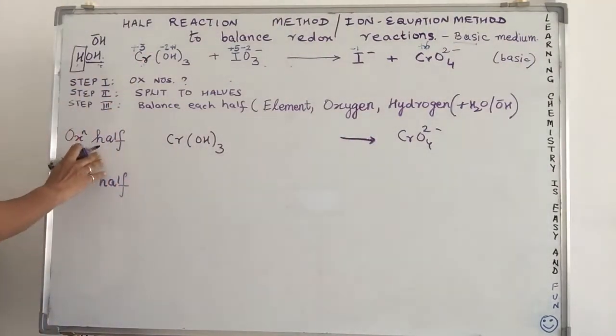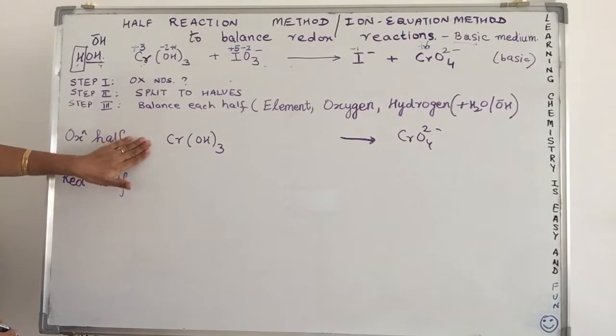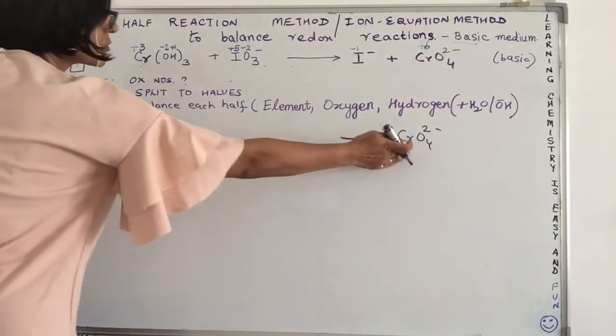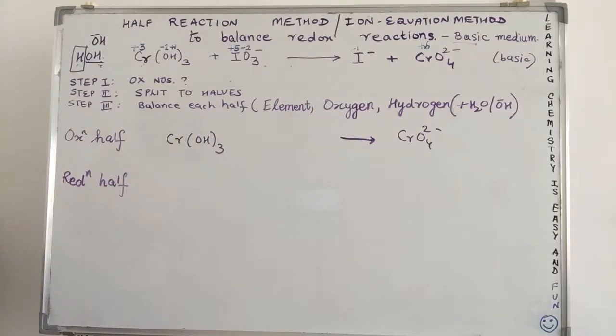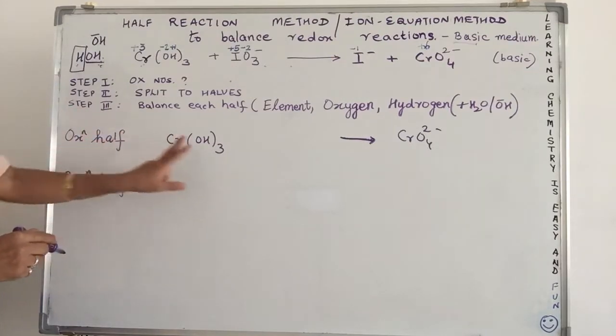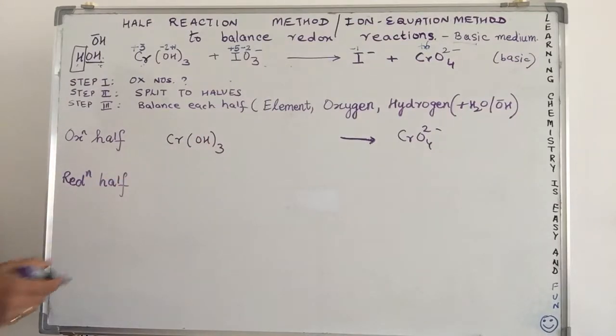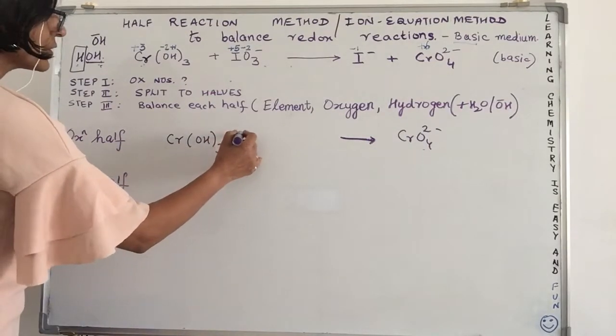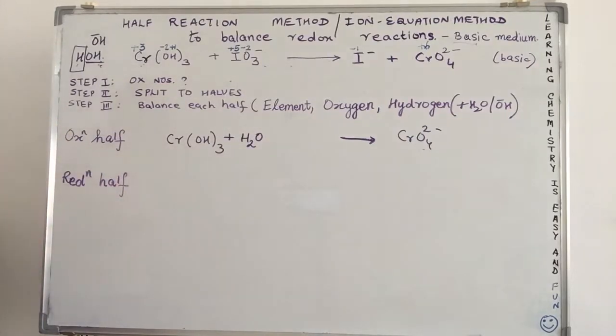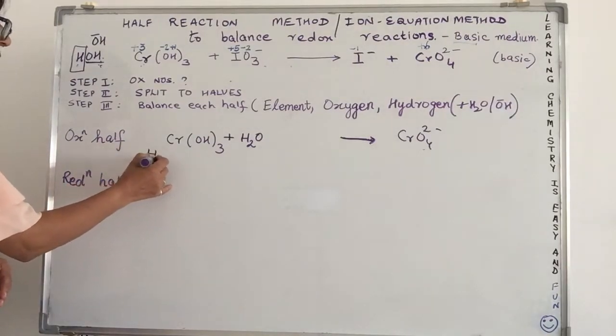Now in balancing, we have to first balance other elements. So other than oxygen and hydrogen, we only have chromium over here. So we are going to balance chromium. One atom of chromium, one atom of chromium. Do we need to balance it? No, no need. Go on to the next. After E comes O. Oxygen. I need to balance oxygen. How many oxygen on the left hand side? 3. How many oxygen on the right hand side? 4. So the reactant side is short of one oxygen atom. So I will simply add one water molecule here.